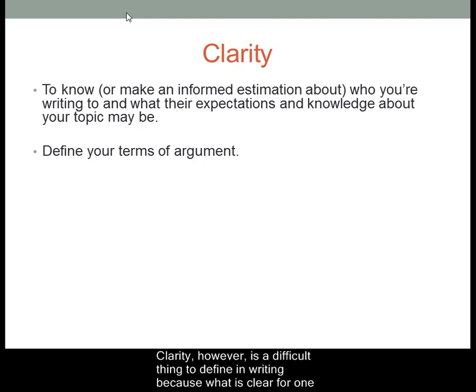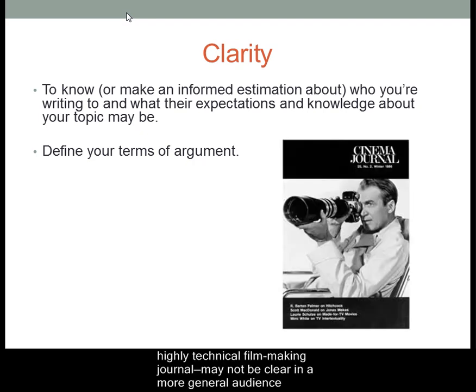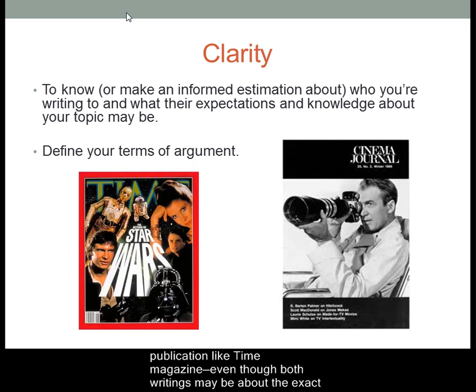Clarity, however, is a difficult thing to define in writing, because what is clear for one person may not be clear for another. And likewise, what is clear in one context — say in a highly technical filmmaking journal — may not be clear in a more general audience publication like Time Magazine,